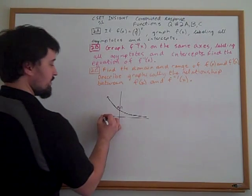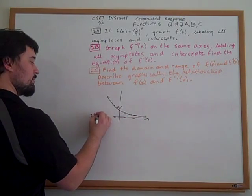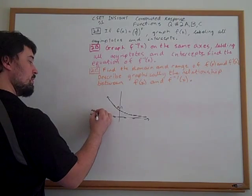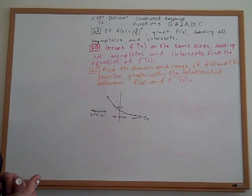Now, labeling the asymptotes, we've not yet done that. So we have y equals 0 as an asymptote. 0, 1 is our intercept.